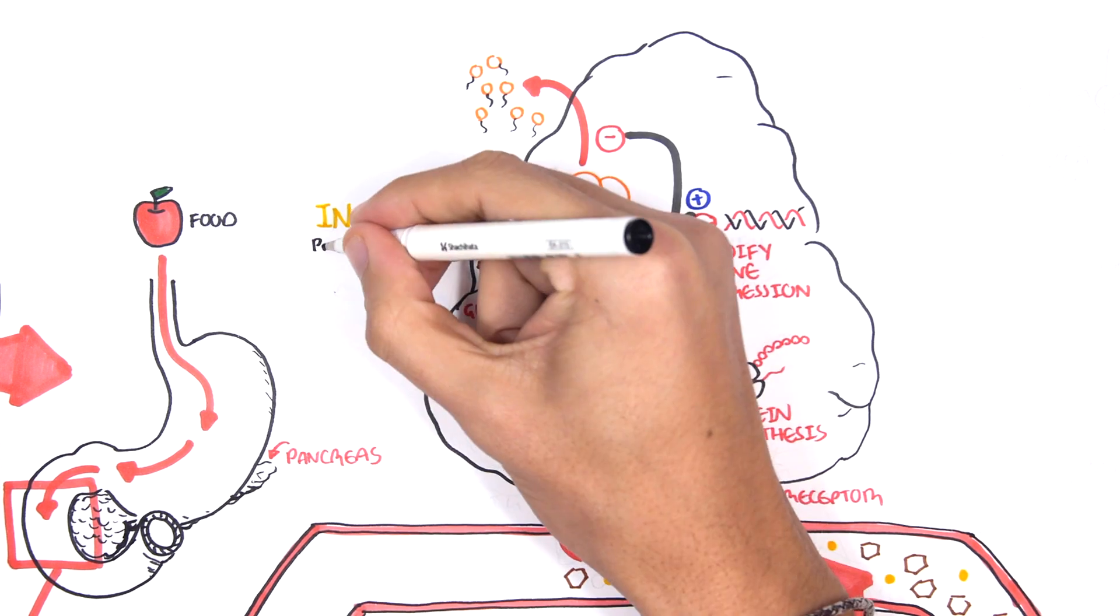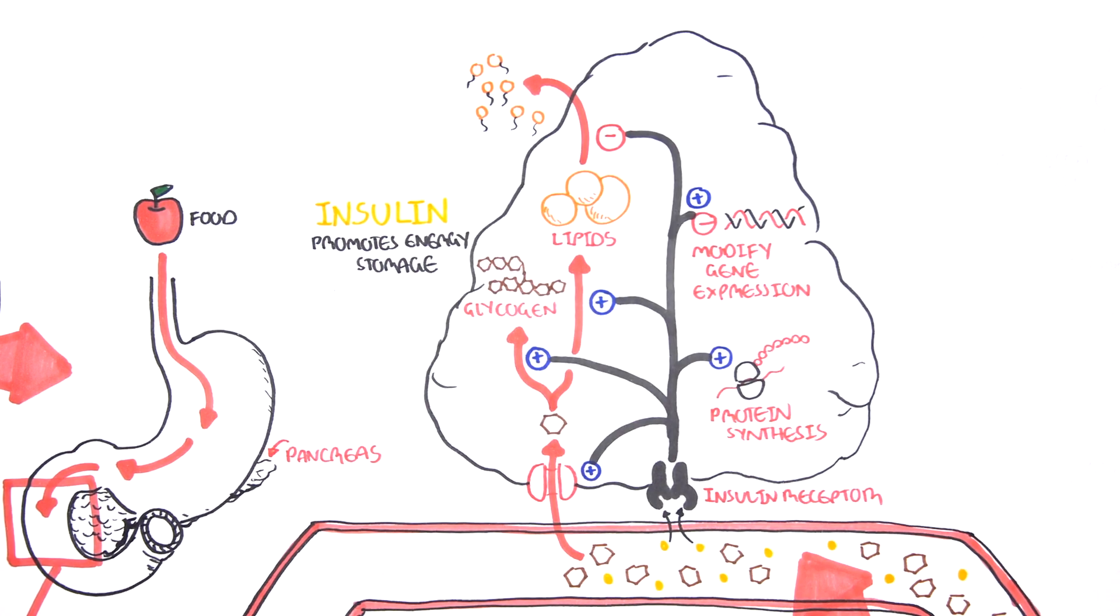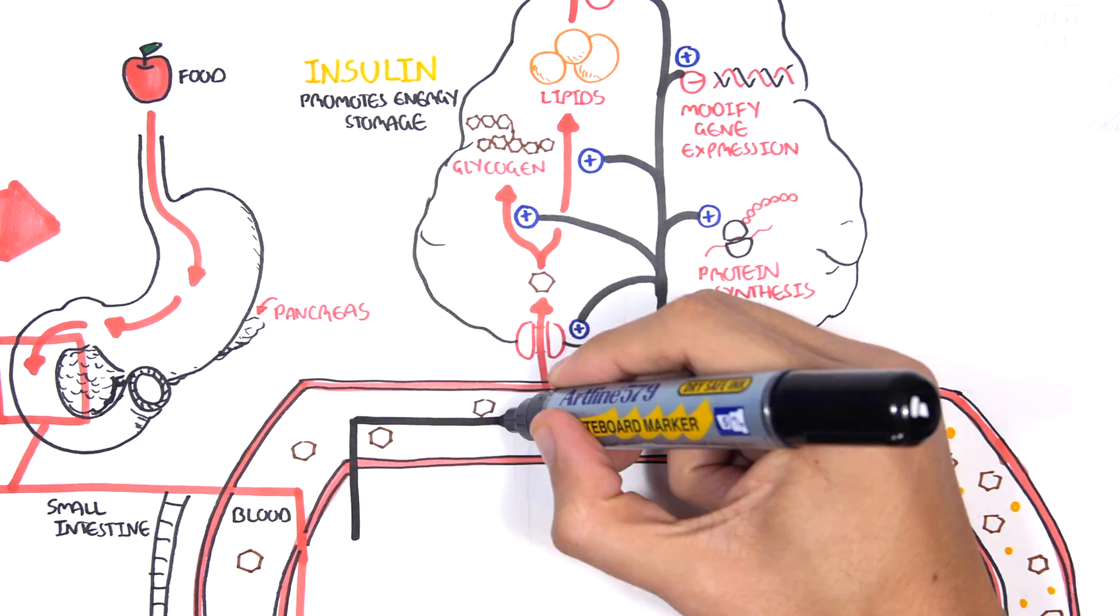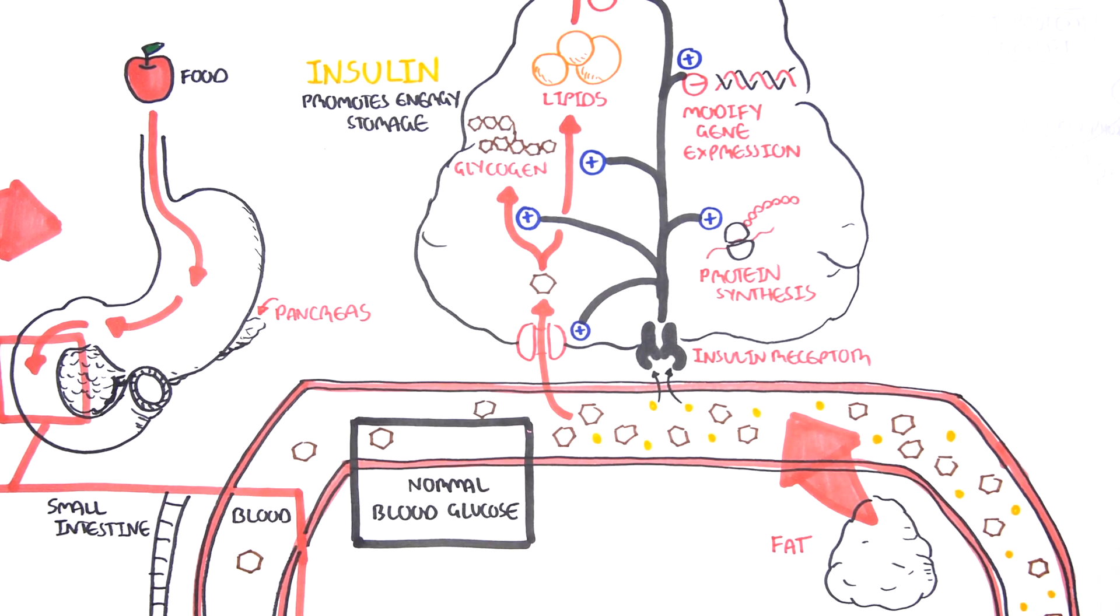Overall, insulin promotes energy storage within fat cells, promoting the clearance of glucose from the blood, returning blood glucose back to normal.